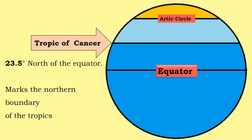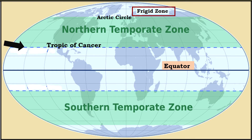At 23 degrees 30 minutes north of the equator lies the Tropic of Cancer. This latitude line marks the northern boundary of the tropics.